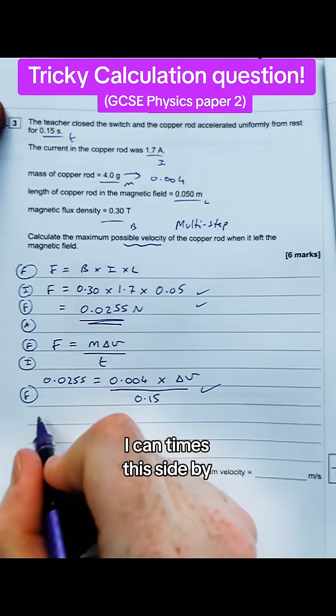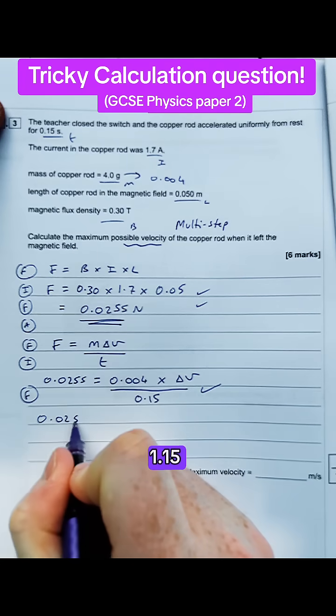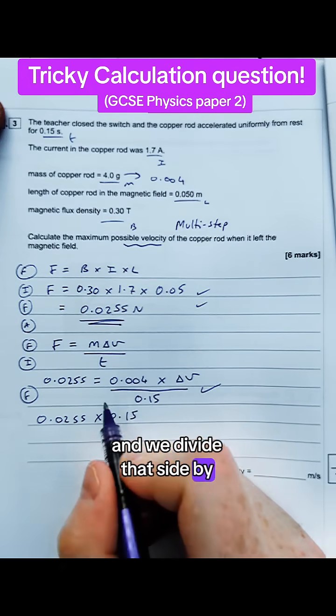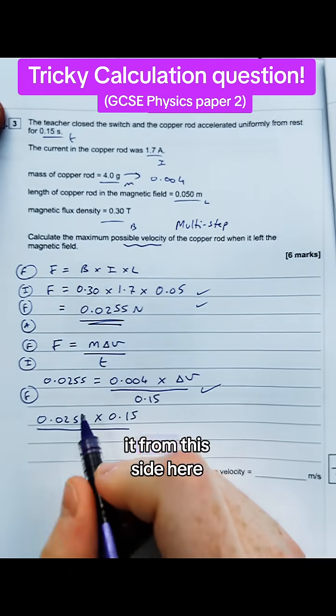Let's rearrange it to find the velocity. I can times this side by 1.15 so I can get rid of it from the right hand side, and we can divide that side by 0.04 to get rid of it from this side here.